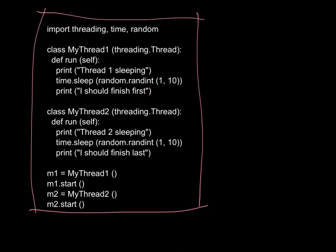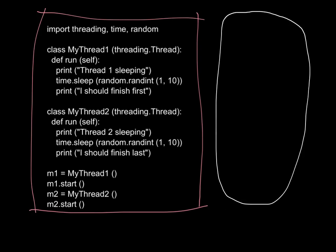The first thread prints out that it should finish first, and the second thread does exactly the same thing but says it should finish last. Imagine there are dependencies between these two threads meaning this one has to finish first always, and this one always has to finish last. The sleep is just simulating an amount of processing. We create our M1 thread and our M2 thread as variables.